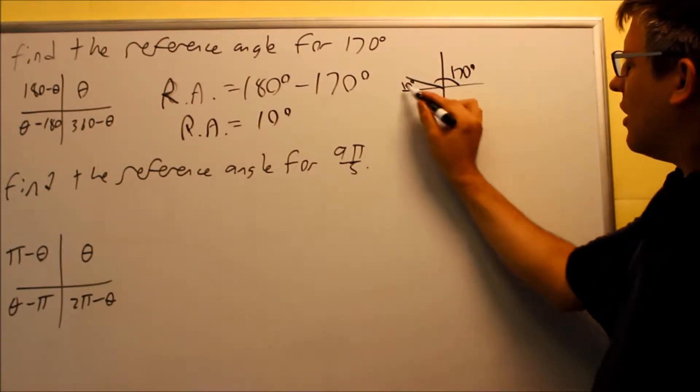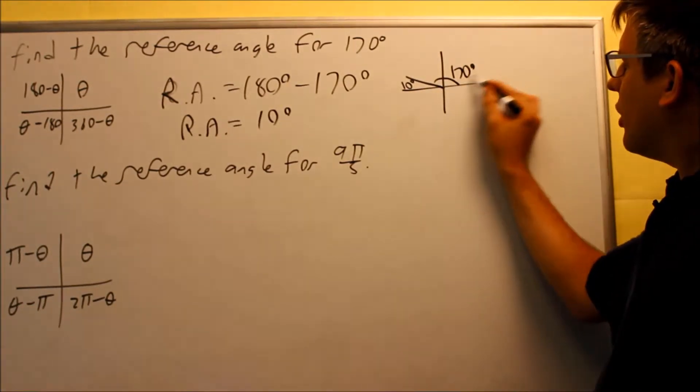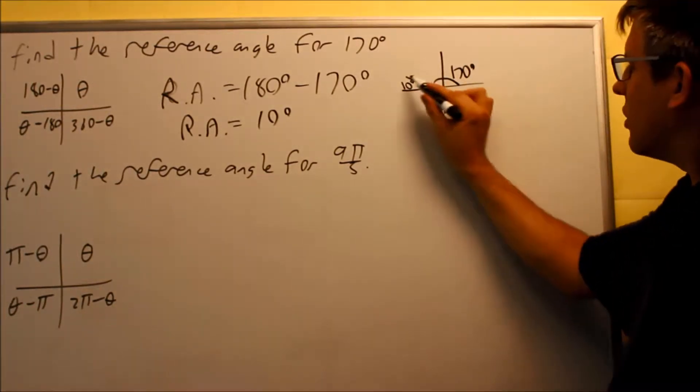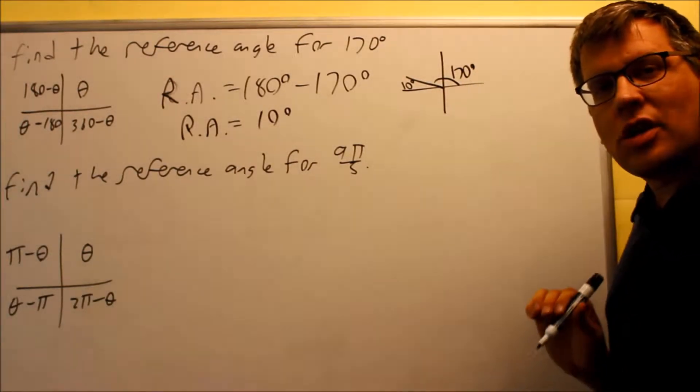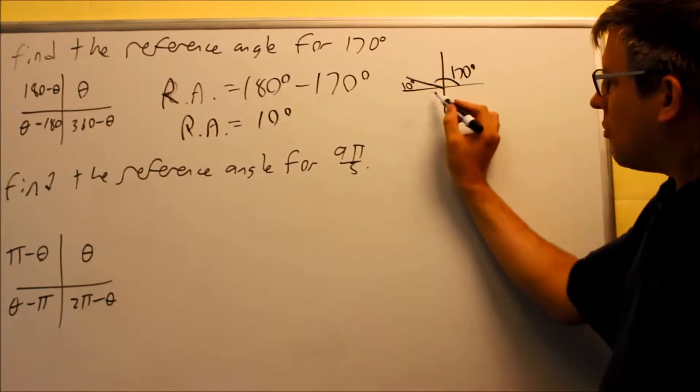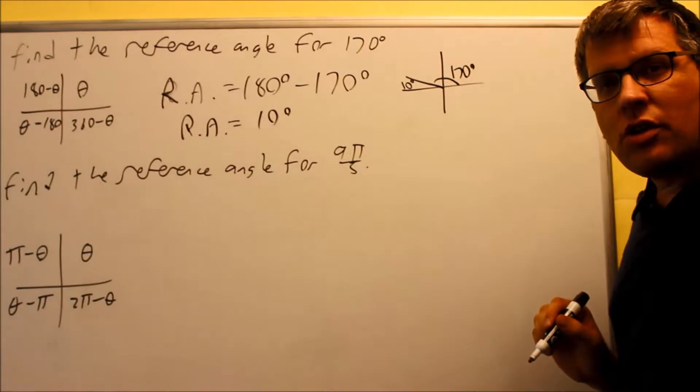So what that's saying is that the 10 degrees here, if we had a line drawn over here in the first quadrant with 10 degrees, that would have the same numerical values, just differing with the plus or minus sign, depending on if you're looking at the x value or the y value. So the main thing all they're asking for is the actual reference angle itself, that would be 10 degrees.